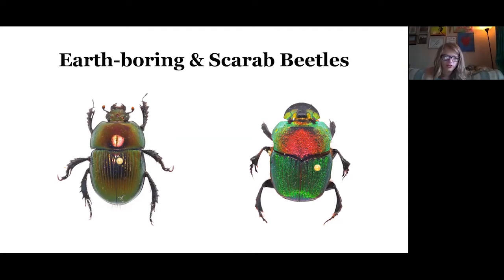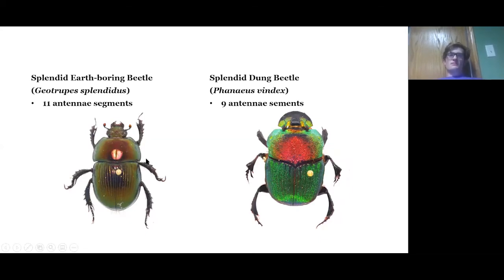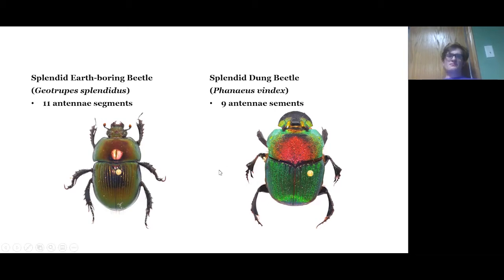The earth-boring scarab is the really shiny one and the scarab beetle is the fuzzy-ish looking one. The way you tell earth-boring scarabs from true scarabs is they will have 11 antenna segments, whereas true scarab beetles will have 8 to 10. These two are ones I see confused a lot in collections, so that's why I included this one.